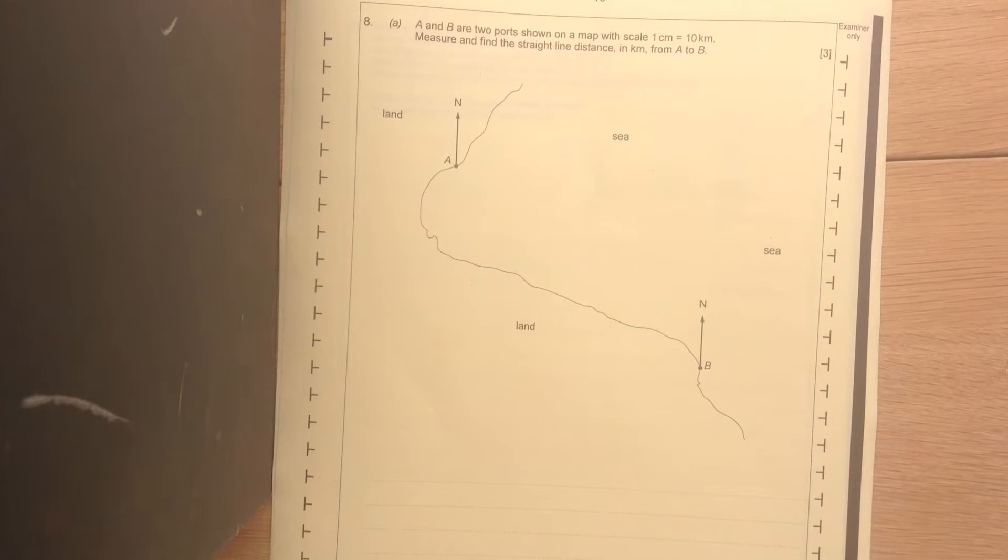A and B are two ports shown on the map with a scale of 1cm equals 10km. Measure and find the straight line distance in kilometres from A to B.